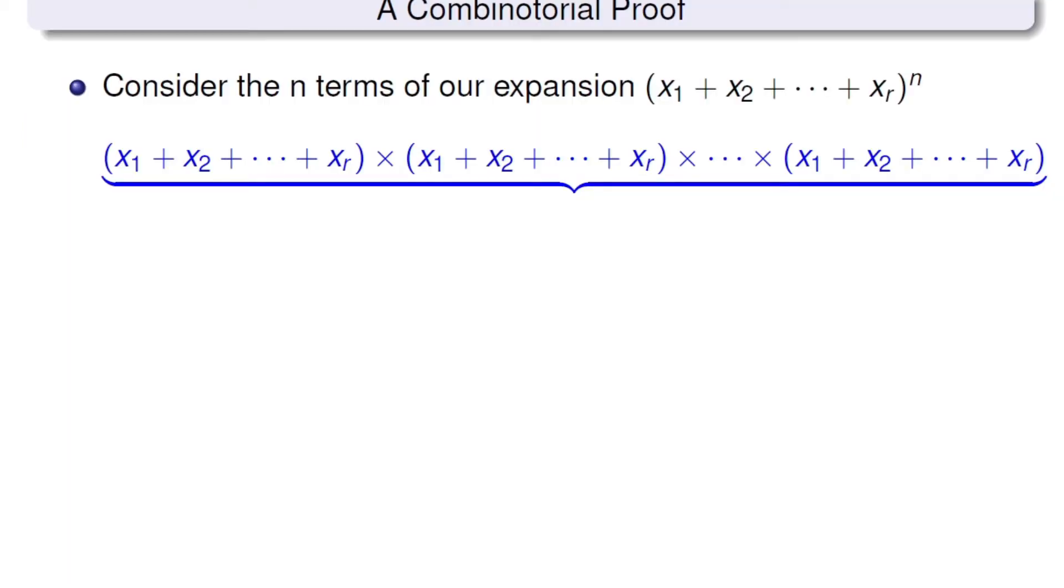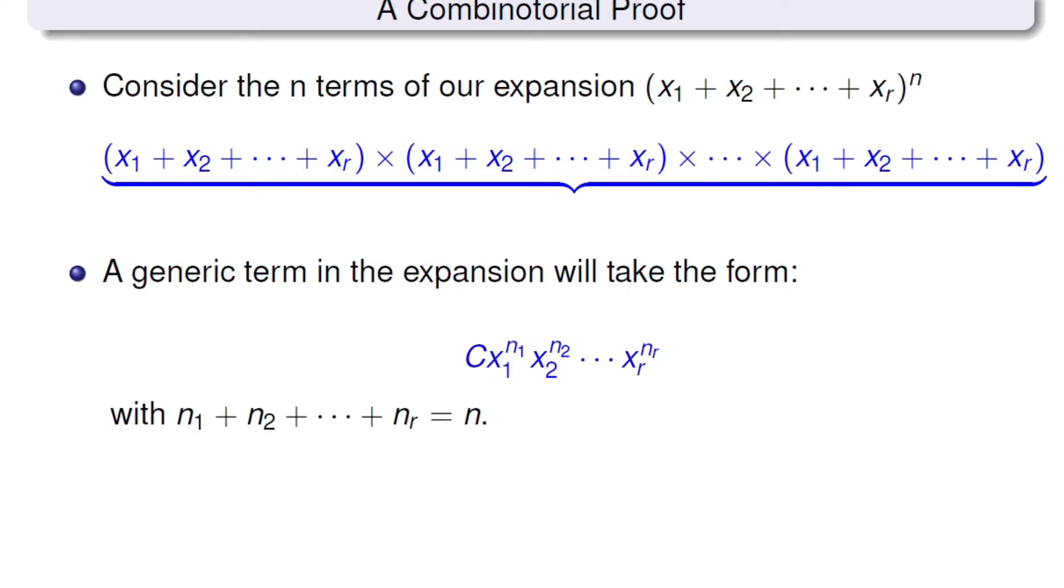Now, if we consider this expansion, there are n terms here. So from each term we select one variable. So a generic term in the expansion will take the form given here, a constant times x1 to the power n1, x2 to the power n2, and xr to the power nr, with the summation of all these nis being n.